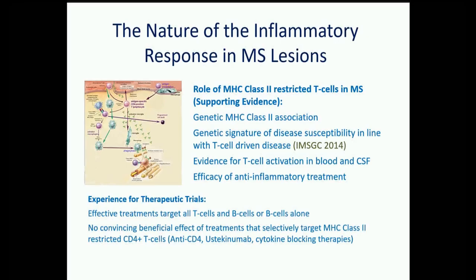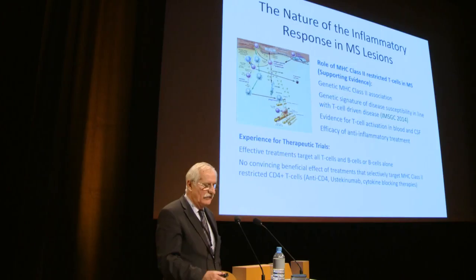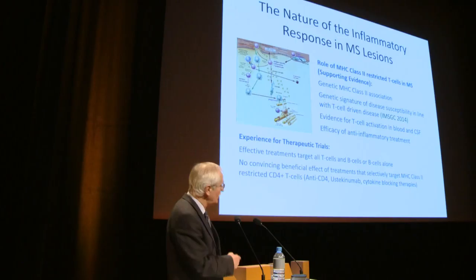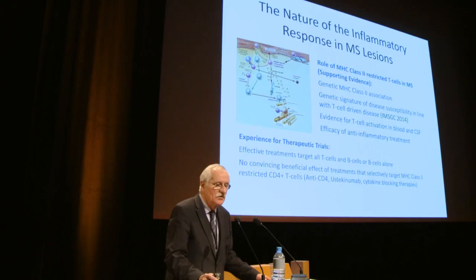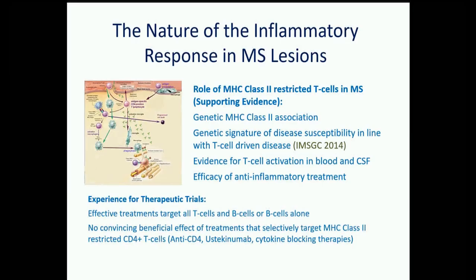The question arose regarding the nature of the inflammatory response. For a long time, guided by genetics findings and EAE experimental models, a relatively simple concept prevailed: CD4 MHC class II-restricted T cells are activated in the periphery, enter the CNS, get reactivated, produce cytokines, and then damage tissue either directly or indirectly through antibodies.